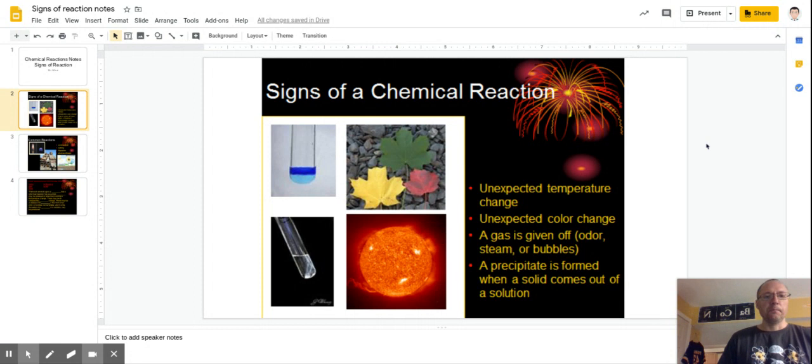Unexpected color change. Again, if I take some red paint and some white paint and I mix them together and it produces pink paint, that's not unexpected. But if I take two colorless liquids and combine them together and it produces something blue or something purple or something white, that would be an unexpected color change.